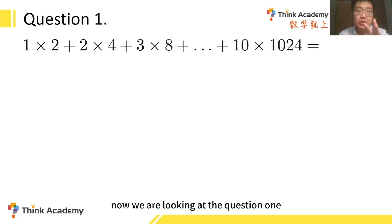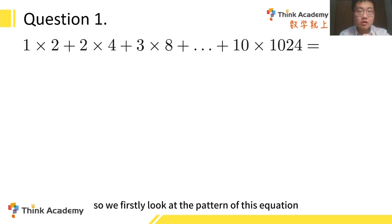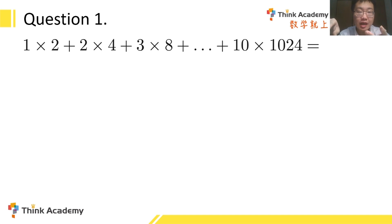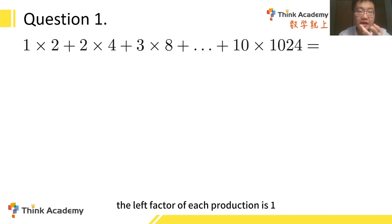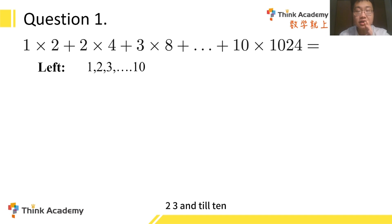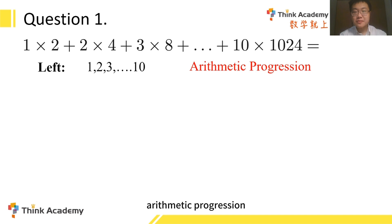Now we are looking at question 1. We want to find the sum of these 10 products. So we firstly look at the pattern of this equation. There are 10 products, and each of them contains two factors. The left factor of each product is 1, 2, 3, up to 10, which is obviously an arithmetic progression. We are very familiar with it.